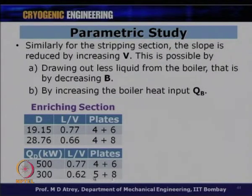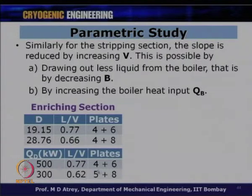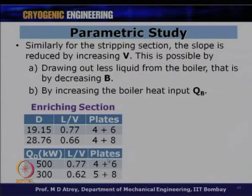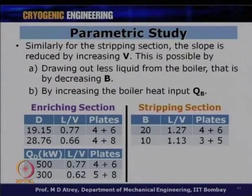Each additional plate represents a very important design change and investment in the column design. The key insight is: as the slope L/V decreases, the operating line shifts towards the equilibrium curve, increasing the number of plates required. Similarly, in the stripping section, decreasing B (taking less liquid from the bottom) would also affect the slope and the number of plates.